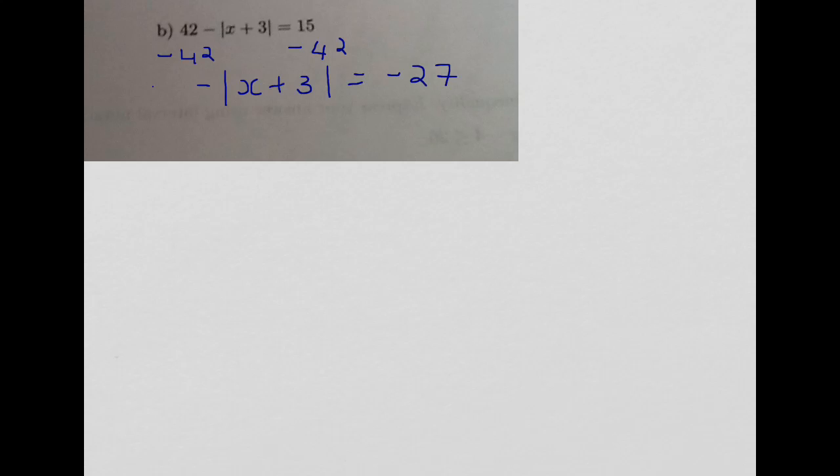And now, we need to get rid of this negative. Secretly there's a negative 1 there that's stuck with multiplication to the absolute value, so we divide by negative 1, and we get absolute value of x plus 3 equals 27. Now we're ready to split